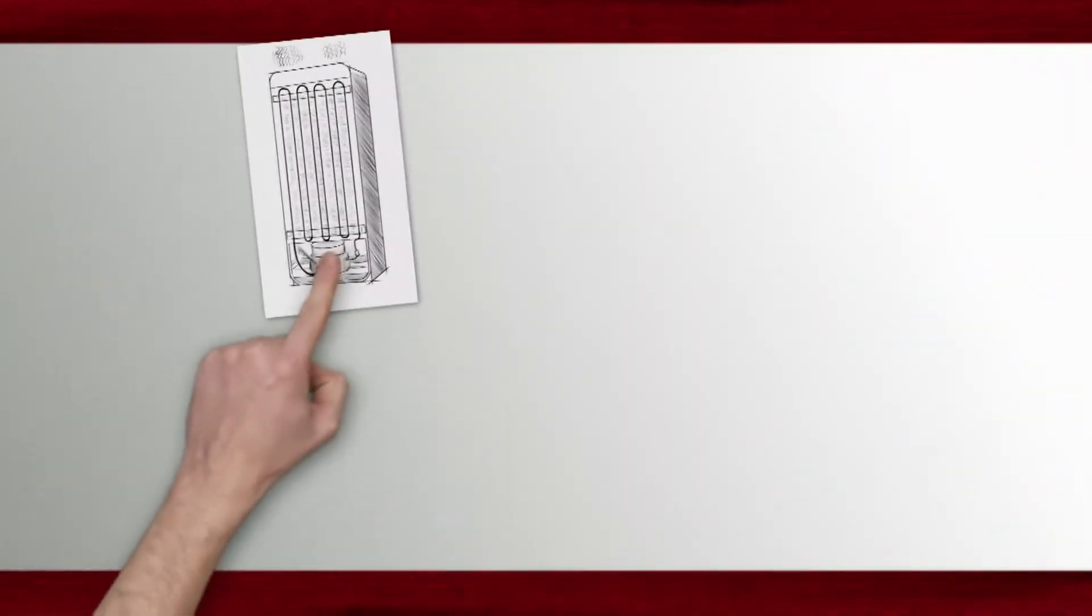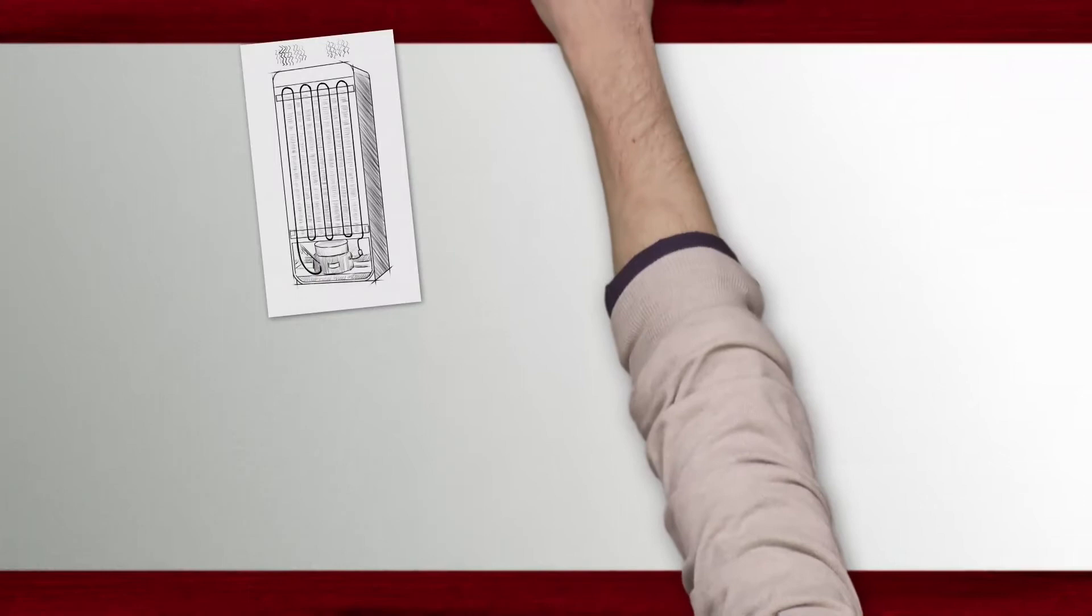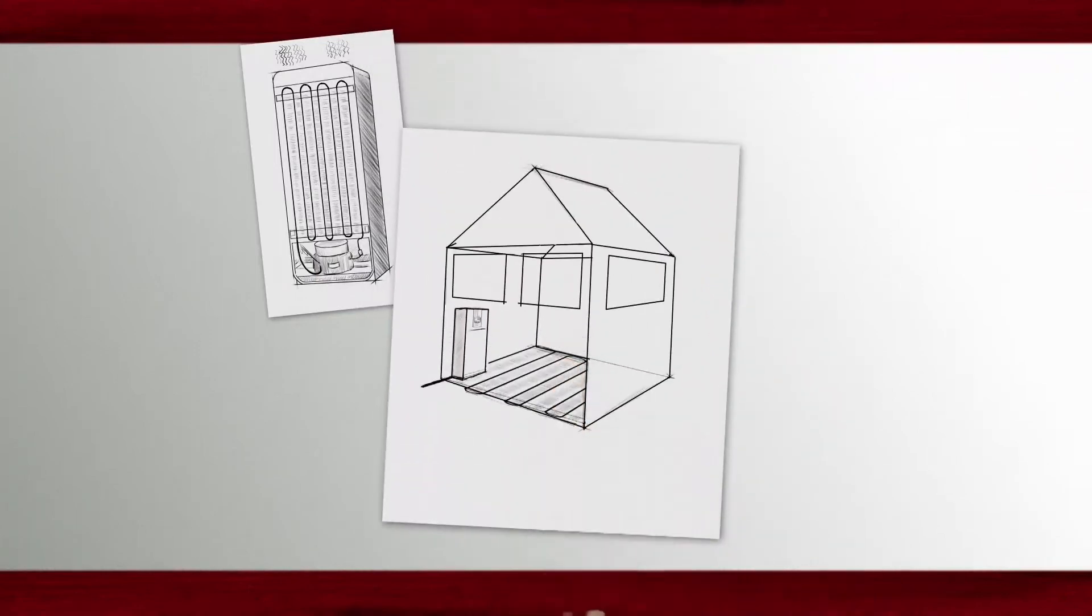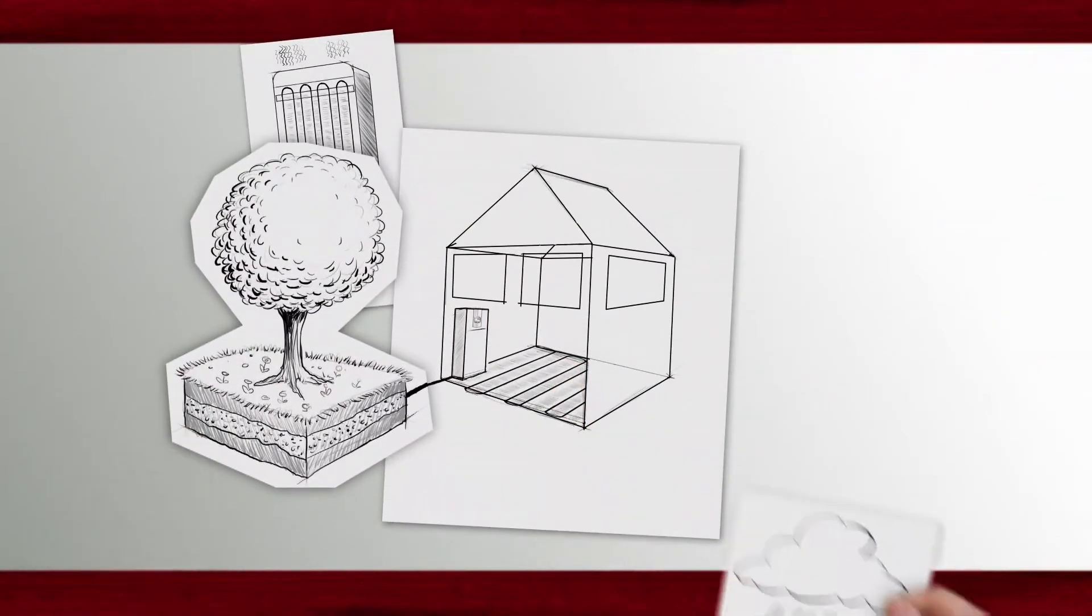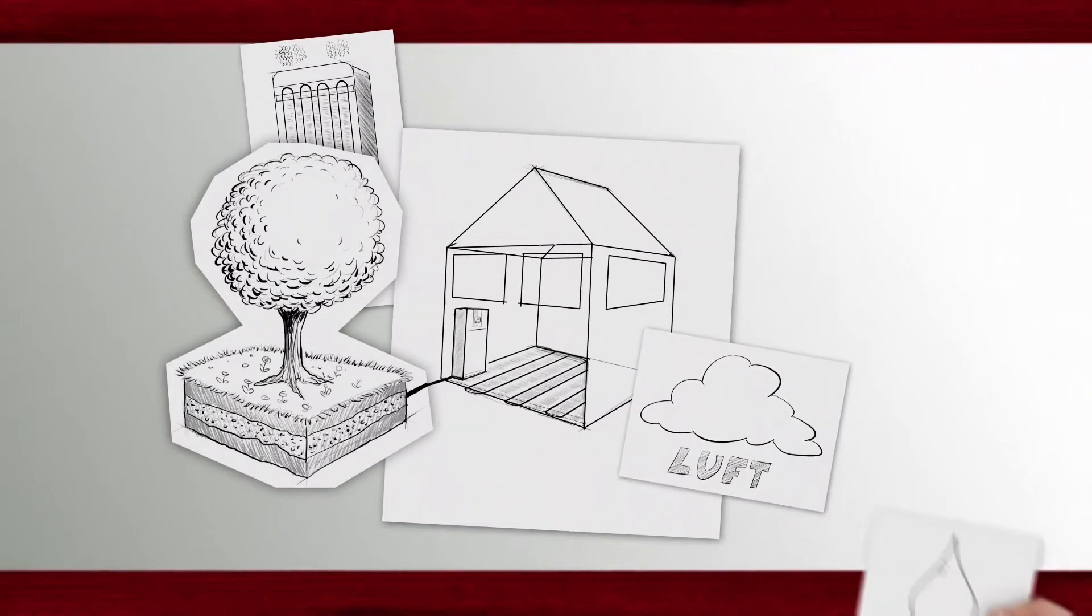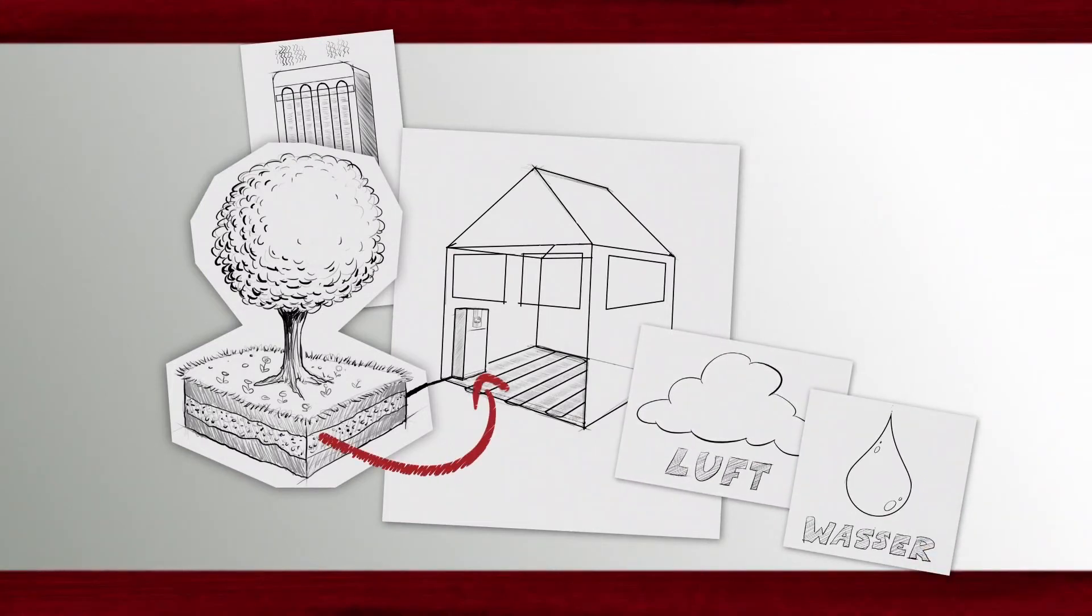Now imagine that the heat exchanger is underfloor heating and the heat pump removes stored solar energy from the soil, the air, or the groundwater and transmits it to the heating system in the house. So quite simple.